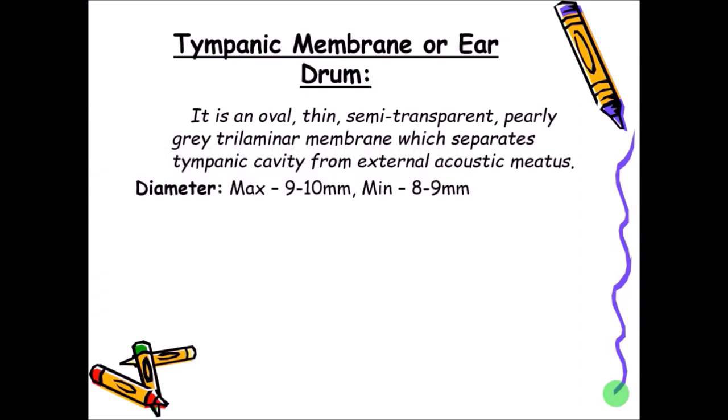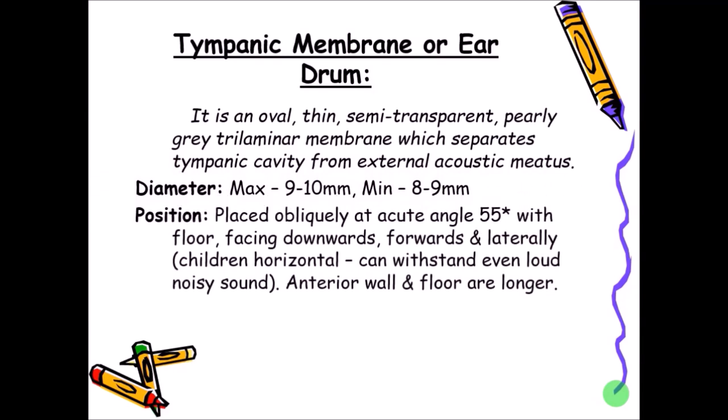The diameter at maximum is 9 to 10 millimeters and the minimum is 8 to 9 millimeters. It is placed obliquely at an acute angle of 55 degrees with the floor, facing downwards, forwards, and laterally. In children the tympanic membrane is more horizontal compared to adults and can withstand louder sounds. Because of the 55-degree angulation, the anterior wall and floor are longer than the posterior wall and roof.